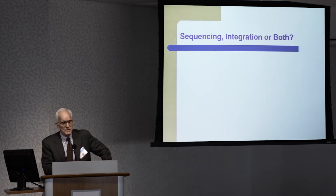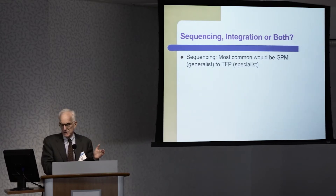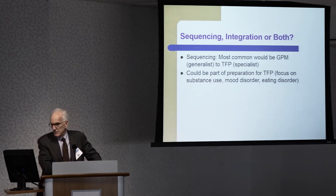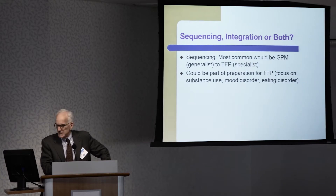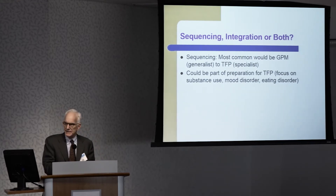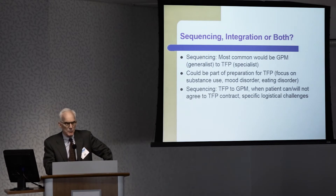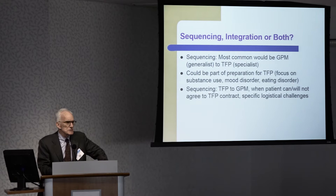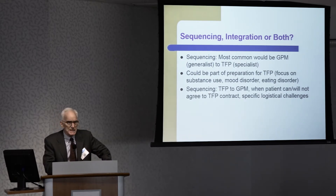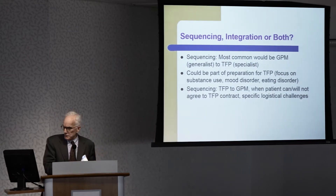The question is: with GPM and TFP, is it best thought of as sequencing, integration, or both? The most common sequencing would be moving from a GPM treatment done by a generalist to a TFP treatment done by a specialist. Alternatively, a GPM treatment could be preparation for TFP — for example, a patient with substance use disorder, mood disorder, or eating disorder requiring a preliminary period before TFP could begin. Sometimes it's useful to go from TFP to GPM when a patient cannot or will not agree to the TFP contract, or there are specific logistical challenges. Not every patient can fulfill the requirements of the TFP contract, and the clinician may feel GPM would be appropriate in that circumstance.